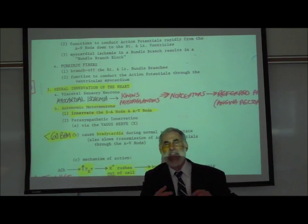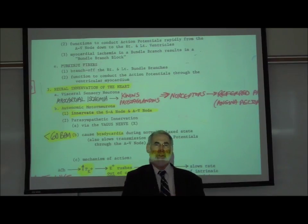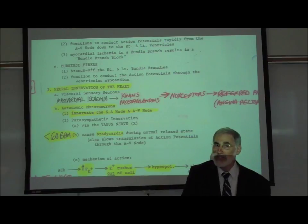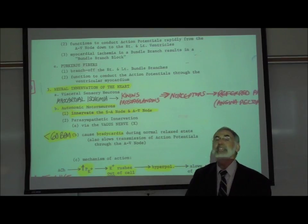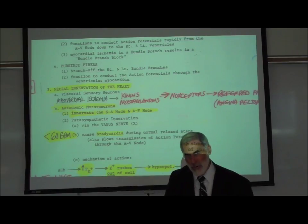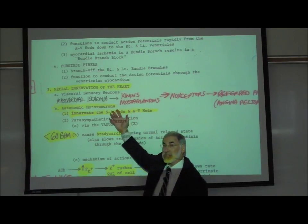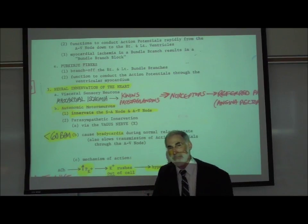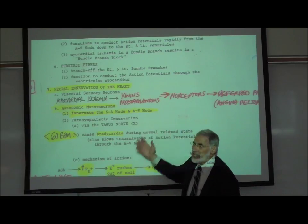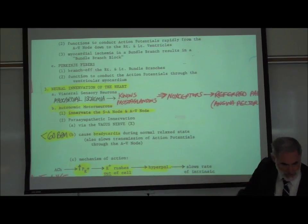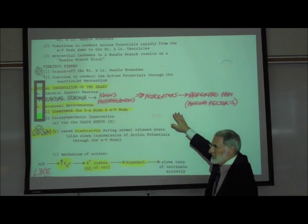We have talked about angina pectoris, which is caused by myocardial ischemia. When heart muscle cells aren't getting enough oxygen, they cannot produce as much ATP as usual. This injures the cells, and these ischemic cells start to release chemical mediators of inflammation, including kinins and prostaglandins. We know that kinins and prostaglandins stimulate pain sensory neurons, which are really a type of chemoreceptor.